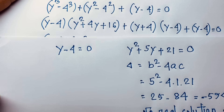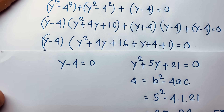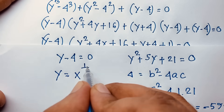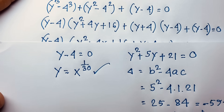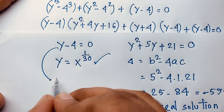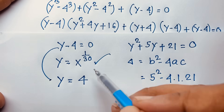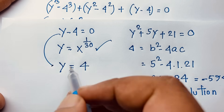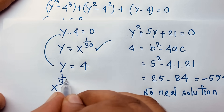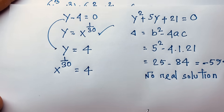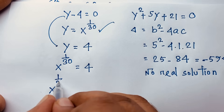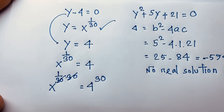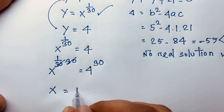From case one, y minus 4 equals 0, so y equals 4. Recalling that y equals x to the power 1 over 30, we substitute: x to the power 1 over 30 equals 4. Raising both sides to the power of 30, the exponent 1 over 30 times 30 cancels to 1, giving x equals 4 to the power 30.